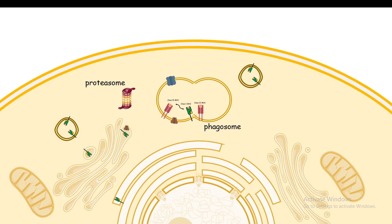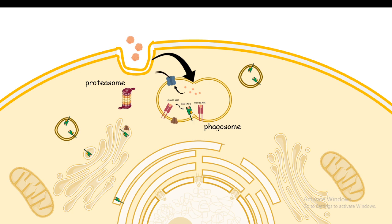Now let's look at what changes happen in the dendritic cell. The dendritic cell has engulfed antigens derived from pathogens, nearby dead cells, or other sources. These antigens are endocytosed and enter a phagosome, where they are normally loaded onto class 2 MHC and displayed on the surface. But in special cases, in special types of dendritic cells, there are certain transporters that allow these antigens in the phagosome to move out into the cytoplasm.